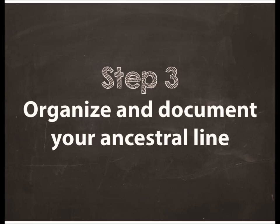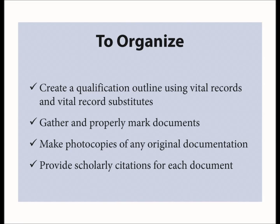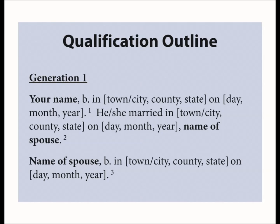Organization is the most important tool when applying to a lineage society. I will cover several suggestions to help you organize all of your information — these tips will help you tremendously later on, as membership applications require very specific details for each generation. Your children and grandchildren will also thank you for properly organizing this documentation. I will go over specifically: one, how to create a qualification outline including the correct genealogical formatting; two, how to gather, mark, and make photocopies of these documents; and three, how to provide citations for each of these records. To organize information, we first recommend creating a qualification outline — an excellent way to organize information for each generation in your line of descent, especially if you are planning to apply to more than one society.